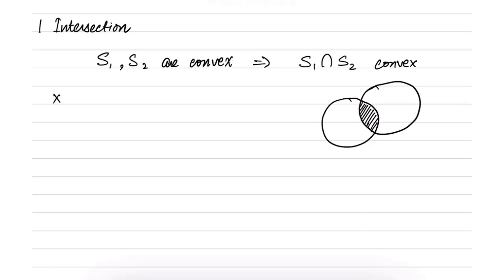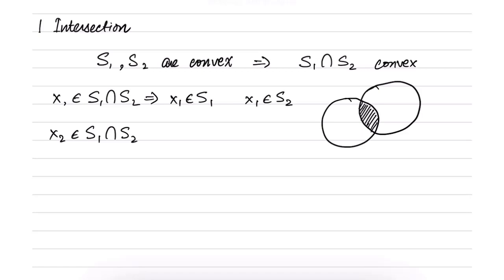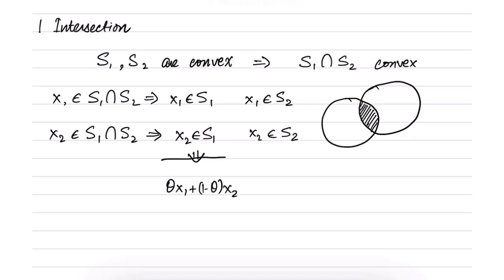Let us say there are two points: X1 belongs to S1 intersection S2, and likewise X2 belongs to S1 intersection S2. Because X1 belongs to S1 intersection S2, it therefore also belongs to both S1 and S2. This is just the definition of convexity.